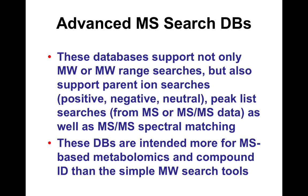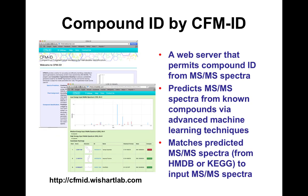CFMID is a server for compound identification from tandem mass spectra (MS-MS data). It also predicts MS-MS spectra from known compounds using machine learning, and has been adapted to GC-MS data. It is currently the only tool that allows you to draw a compound and predict its EIMS or MS-MS spectra. It has a large library of both predicted and known spectra, so users can upload a spectrum and ask what it matches.